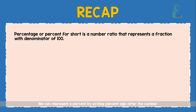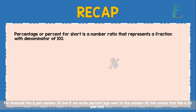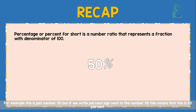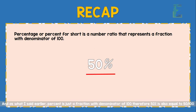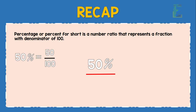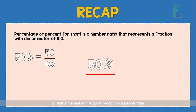We can represent a percent by writing a percent sign after the number. For example, this is just the number 50, but if we write a percent sign next to 50, this means 50%. And as I said, percent is just a fraction with a denominator of 100. Therefore, 50% is also equal to 50 over 100. So that's the end of the quick recap about percentage.